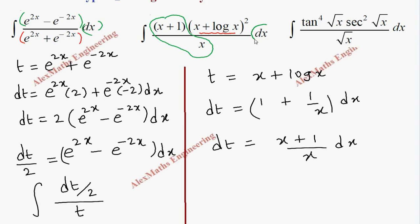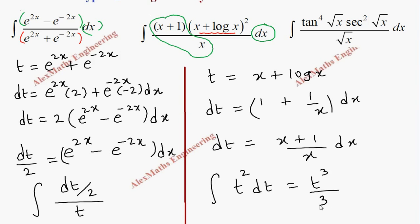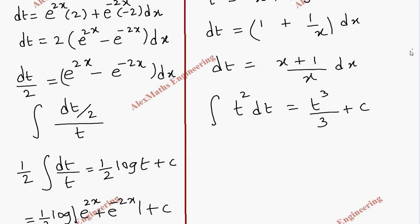We find the term (x + 1/x) dx in the question, so we replace everything in terms of t. The integration of (x + log x)² becomes t² dt. Its integration is t³ by 3 plus c, and replacing the value of t gives (x + log x)³ divided by 3 plus c.